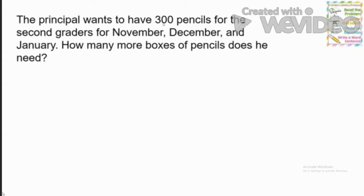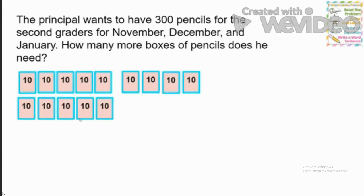The principal wants to have 300 pencils for the second graders for November, December, and January. How many more boxes of pencils does he need? We already have 140 pencils because we had 14 packages, and in each package we had 10 pencils. Now he wants 300 pencils, so we need to keep counting from 140 until we get to 300.